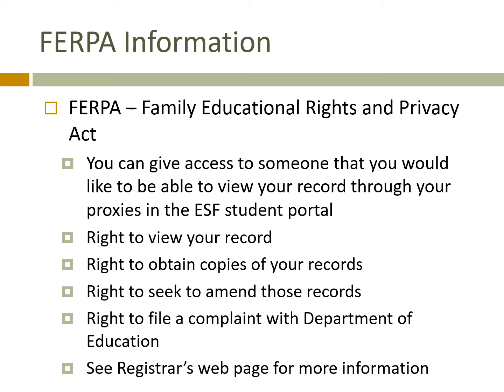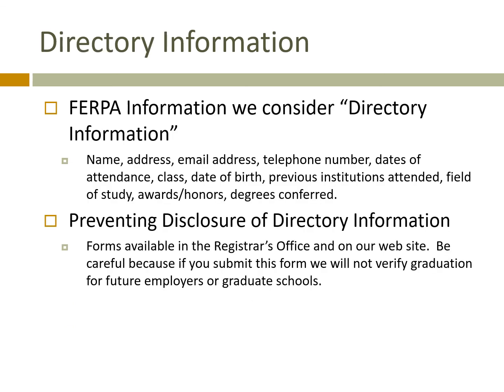The Family Educational Rights Privacy Act protects your rights as a student. You can give your parents or another person access to review your record through proxies in the ESF Student Portal. You also have the right to review your record, obtain copies of your records, and seek to amend those records. If you're not satisfied with the outcome of an amendment request, you can file a complaint with the Department of Education. We will give out directory information on students, and you can file with us to prevent disclosure of directory information. However, be careful: once you submit that form, it stays with you after graduation, and we will not verify that you attended for future employers or graduate schools.